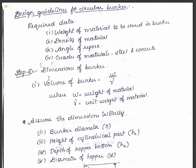The first step is about dimensions of the bunker. First we have to find the volume of the bunker according to the given weight and density. W is the weight of the material, gamma is the unit weight of the material, and W divided by gamma gives the volume of the bunker. Later we have to assume the dimensions of the bunker initially according to the volume we got.